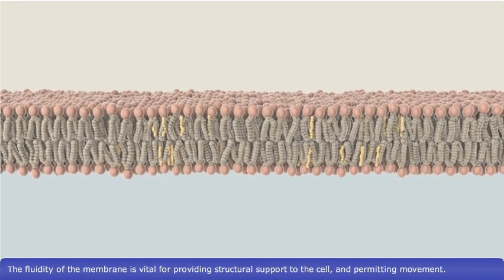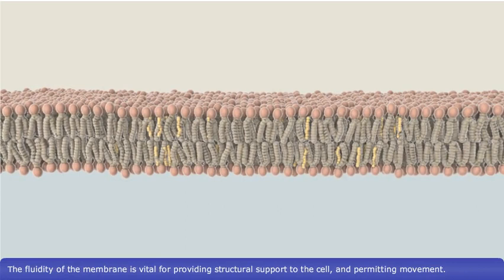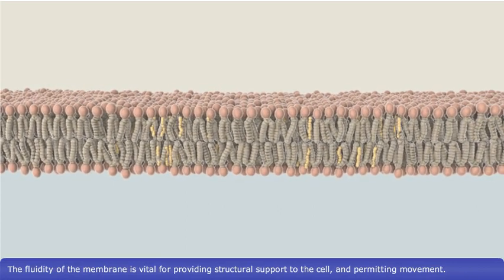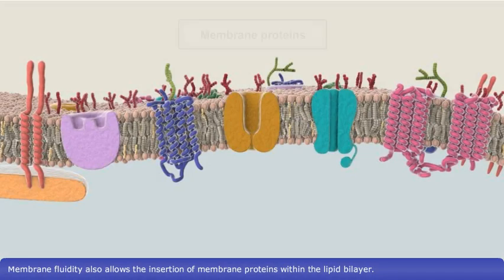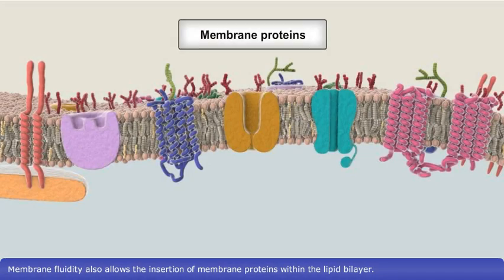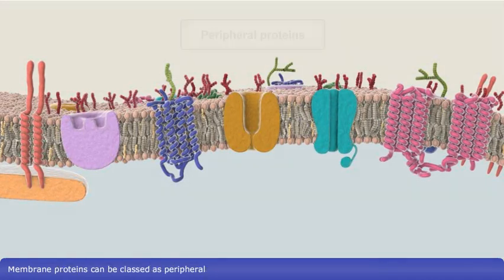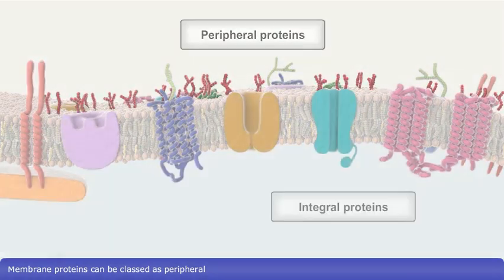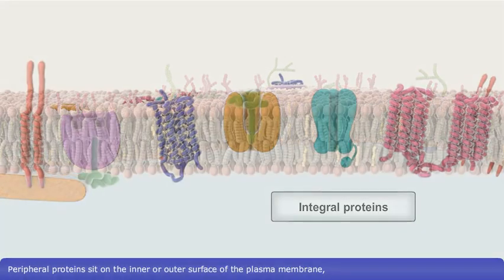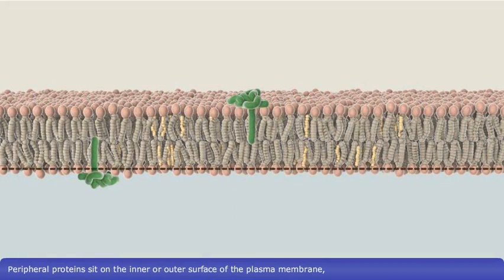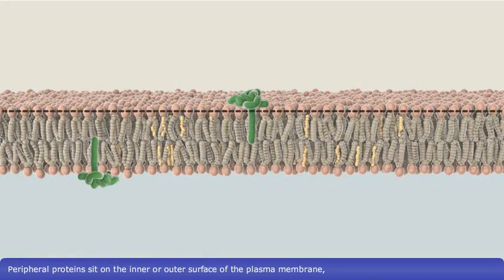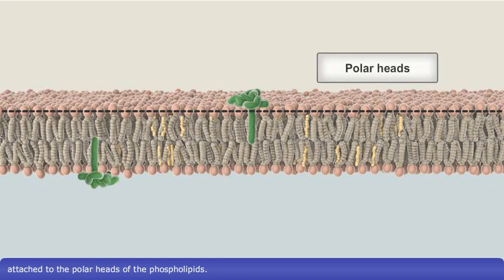The fluidity of the membrane is vital for providing structural support to the cell and permitting movement. Membrane fluidity also allows the insertion of membrane proteins within the lipid bilayer. Membrane proteins can be classed as peripheral or integral. Peripheral proteins sit on the inner or outer surface of the plasma membrane attached to the polar heads of the phospholipids.